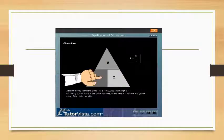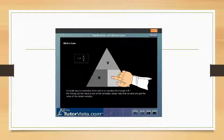Similarly, if we hide R, we get R is equal to V by I. And if I is hidden, we get I is equal to V by R.